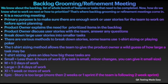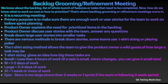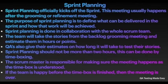T-shirt sizing gives the product owner a rough estimate of how large a task may be. Sizes can be small, medium, large, and extra large — and there's 'epic' for tasks that are simply too large. Small is less than four hours of work, medium is one to two days, large is three to four days, extra large is one week or more. Everyone working on the stories should be in the grooming session, including the product owner and Scrum master, who drives the whole session.